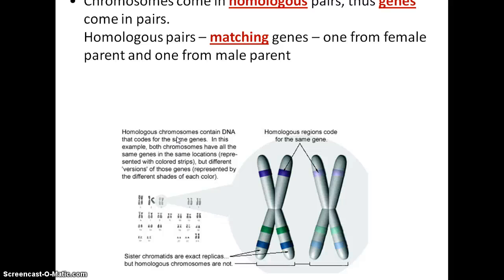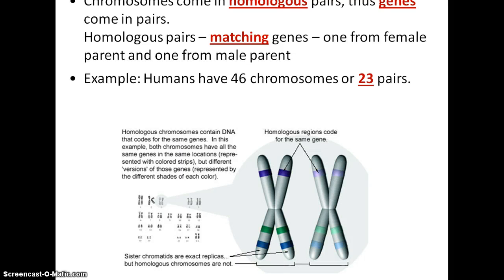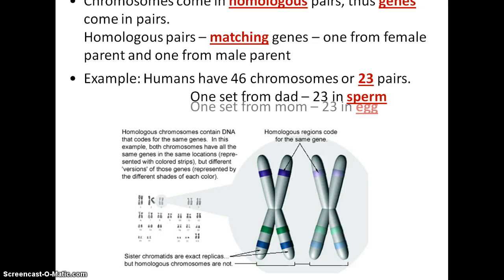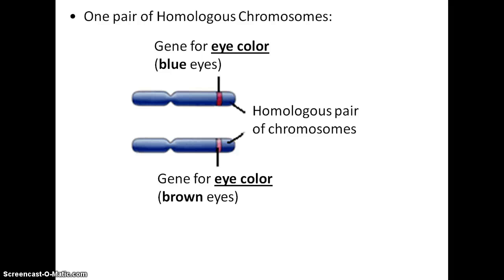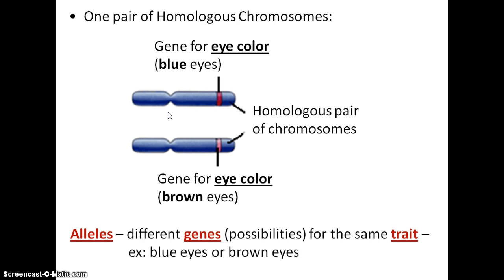In homologous pairs, one you get from mom and one you get from dad. In humans, we have 46 chromosomes, or 23 pairs — one set of 23 from dad and one set from mom. These homologous chromosomes have different versions for particular genes, and we call those versions of a gene alleles.